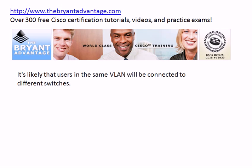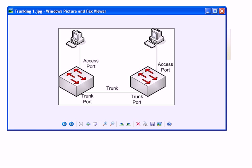It is highly likely that users in the same VLAN are going to be connected physically to different switches. Assuming our two host devices are in VLAN 10 — on a Cisco switch they would be in the default VLAN 1 by default, but let's say we put them in VLAN 10 — they're going to be connected to the switch via an access port, which is a switch port that belongs to one VLAN only. To allow devices in the same VLAN but connected to different switches to communicate, we have to have a trunk connecting our two switches, generally using a crossover cable. A trunk port on a Cisco switch belongs to all VLANs.